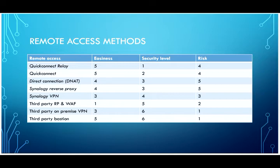For standard QuickConnect, the security level is a bit higher because your data doesn't go through the relay server. QuickConnect uses a direct connection between your devices using a tunnel — essentially destination network address translation (DNAT) or port forwarding on your router. The risk is similar; the difference is that someone needs to know your QuickConnect ID instead of your IP address, making direct connection slightly riskier.